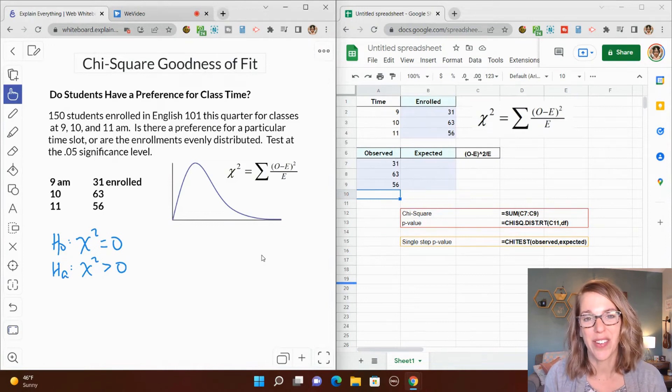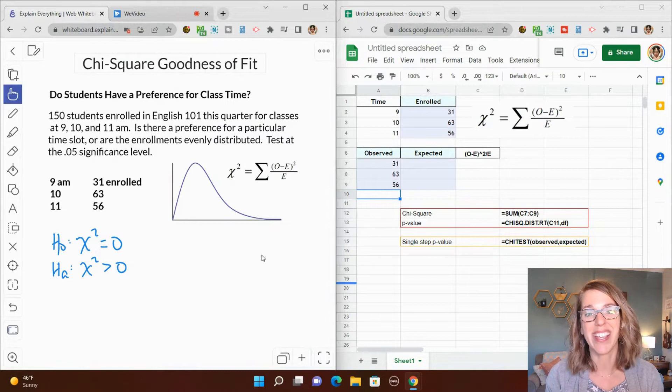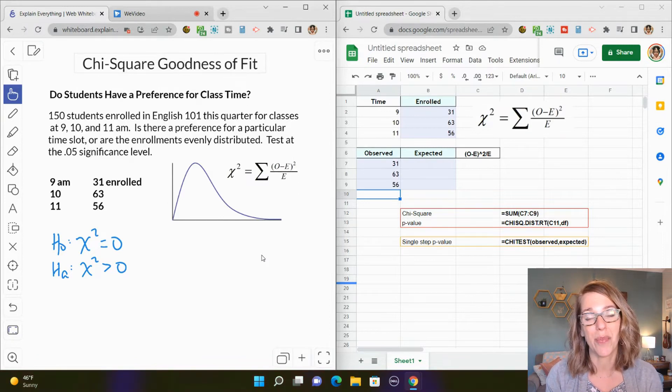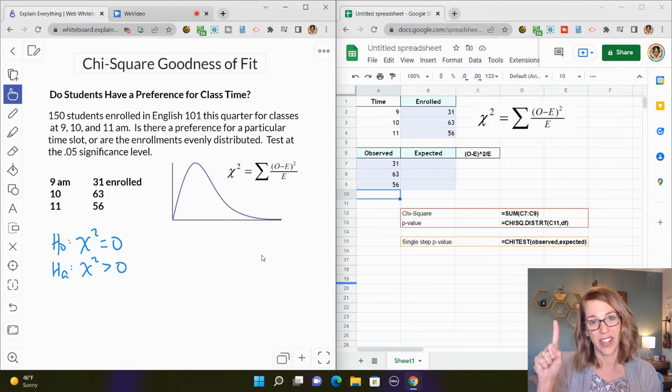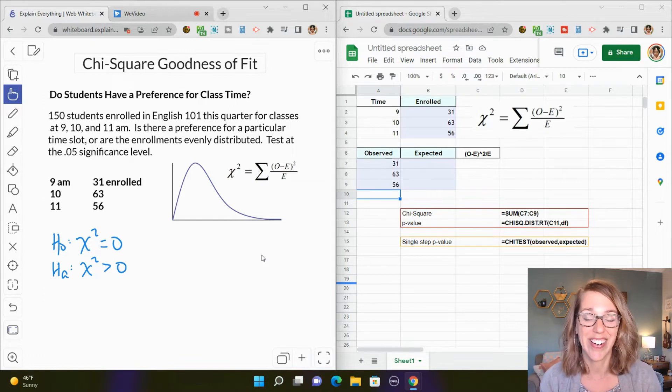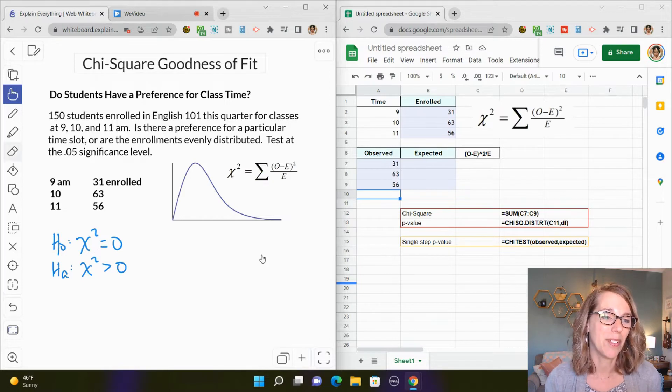We are going to do a chi-square goodness of fit test using either Excel or Google Sheets. The steps are going to be exactly the same. Now if you're looking for a video to show you how to do this either by hand or with a calculator, take a look at the links down in my description below or you can click on the card here. I'm Angie, let's go ahead and dive right in.